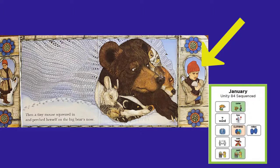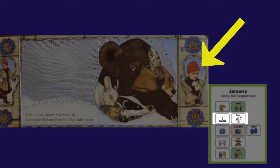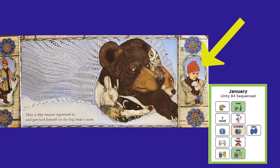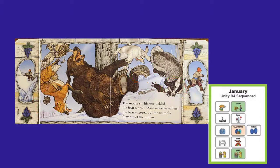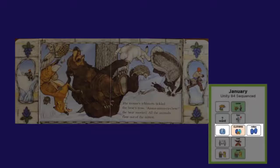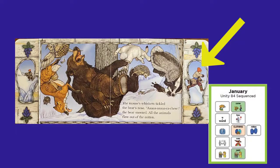I bet the boy is looking for his mitten. How do you think he feels? The mouse's whiskers tickled the bear's nose — achoo! The bear sneezed and all the animals flew out of the mitten. That is so funny. The mouse made the bear sneeze and all of the animals flew out of the mitten. I wondered how they could all fit in there. I'm guessing the boy is still looking for his mitten — maybe he'll find it now.